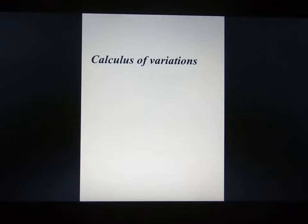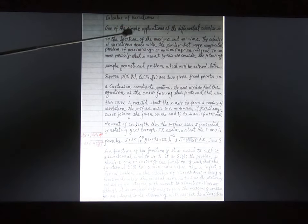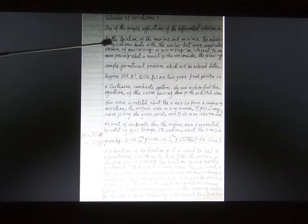Calculus of variation is a simple application of differential calculus used to locate the minimum or maximum. In this case, it's a curve from two points, and you can see this equation. Later I will show you the application, important application of this method.